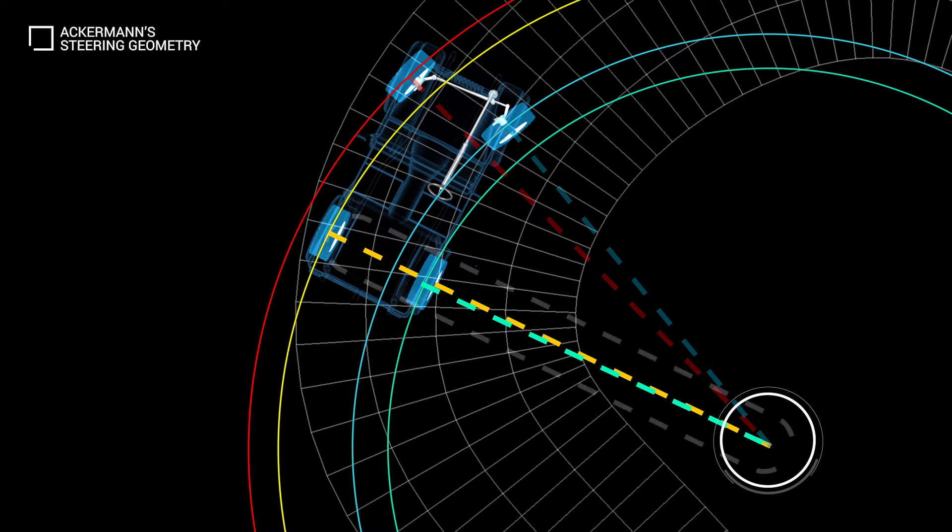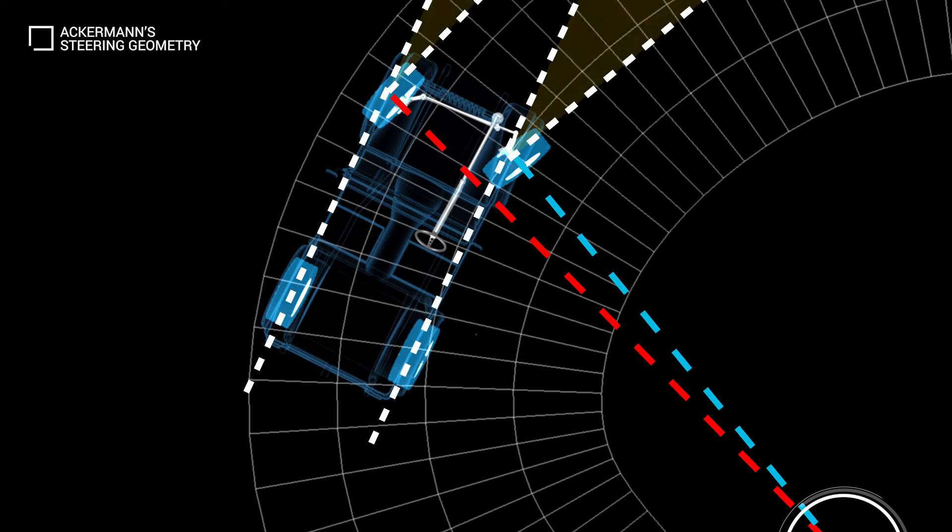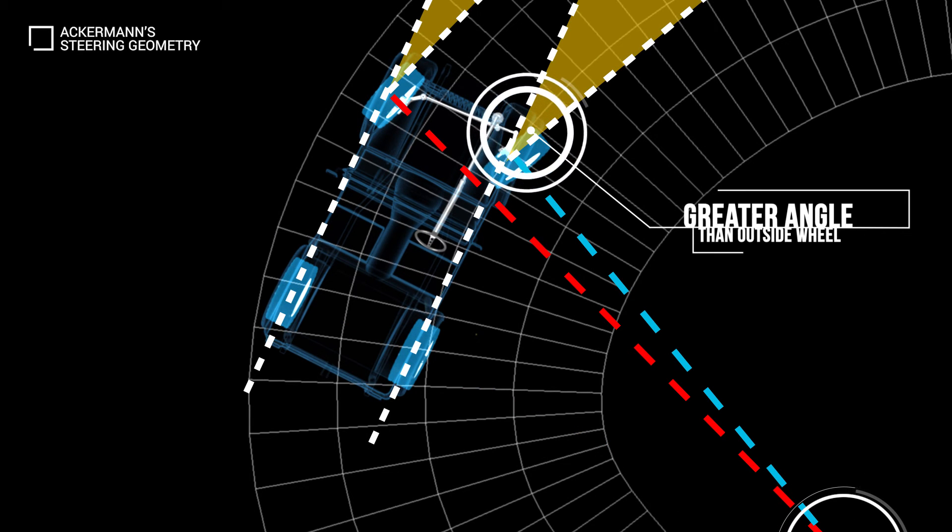Because the rear wheels are fixed, this center point must be on a line extended from the rear axle. Intersecting the axis of the front wheels on this line requires that the inside front wheel is turned through a greater angle than the outside wheel.